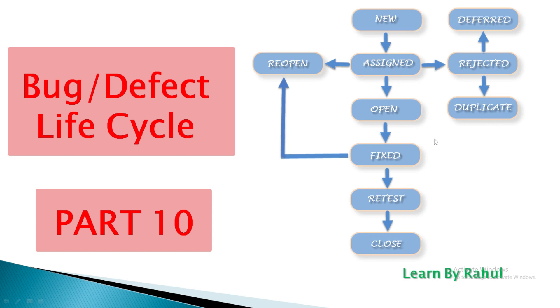Next is REJECTED. If the developer feels the defect is not a genuine defect, then it changes to REJECTED. The third is DUPLICATE. If the defect is repeated twice or corresponds to the same concept, the status is changed to DUPLICATE.